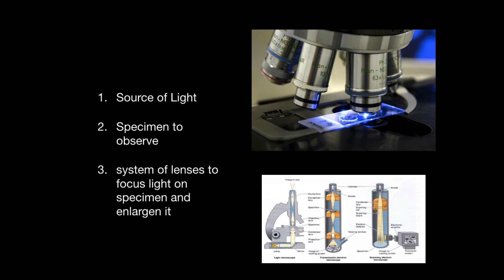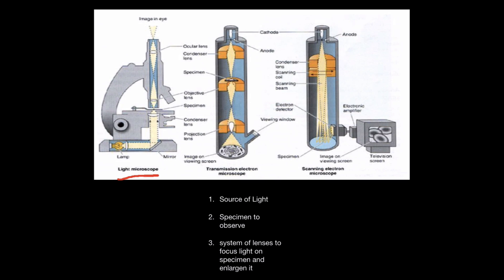For a microscope to work you need three main components: a source of light, a specimen to observe such as tissue slides, and a system of lenses to focus the light and enlarge it. We mainly have two types of microscopes: light microscopes and electron microscopes. In light microscopes, you use a lamp and lenses to focus light on a specimen. In electron microscopes, you use magnets to focus electrons on a specimen. In transmission electron microscopes, the electrons go through the specimen and are then detected, while in scanning electron microscopes the electrons bounce off the specimen and are detected by an electron detector.